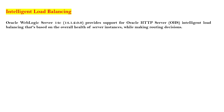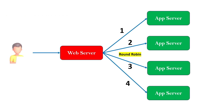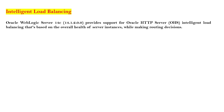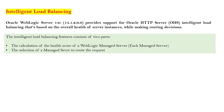To deal with this kind of condition, the new change introduced is called Intelligent Load Balancing. This load balancing is based on the overall health of server instances while making routing decisions. When the web server decides to route a request to a backend server, it is not based on static round-robin only — it will be based on the health of your backend servers.